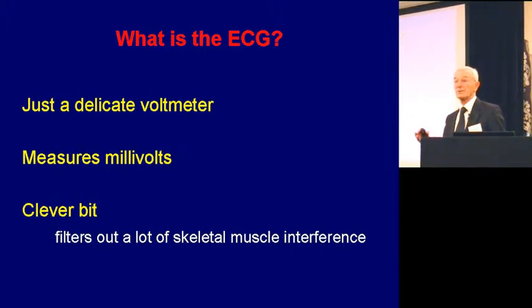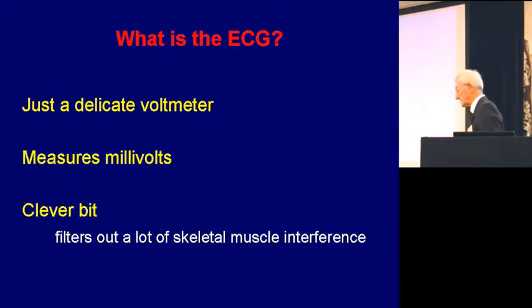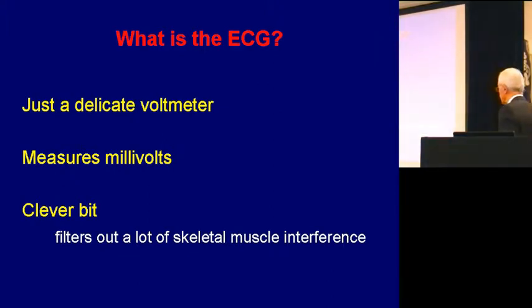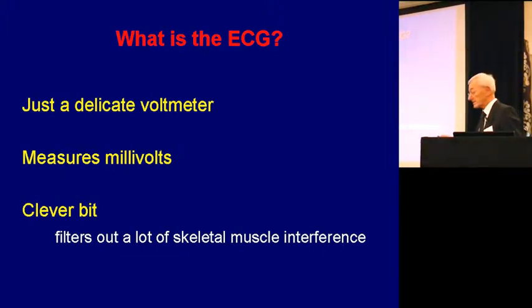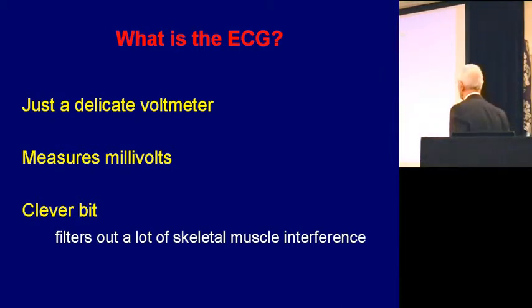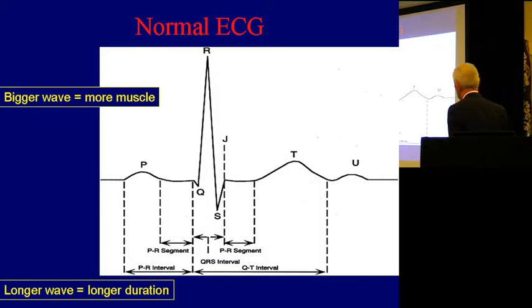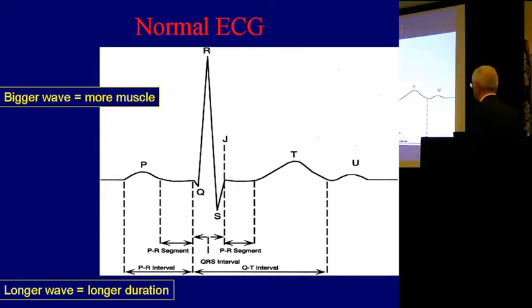You've already heard that you've got increased risk factors. You will see patients with coronary heart disease. They get all sorts of wonderful ECG abnormalities. The ECG is just really a delicate bulk meter. It's quite clever because it filters out a lot of skeletal muscle interference. It doesn't do this well in Parkinson's. They present particular problems. For those who don't know a lot about the ECG, this is a typical ECG squiggle. I'm a squiggle doctor.